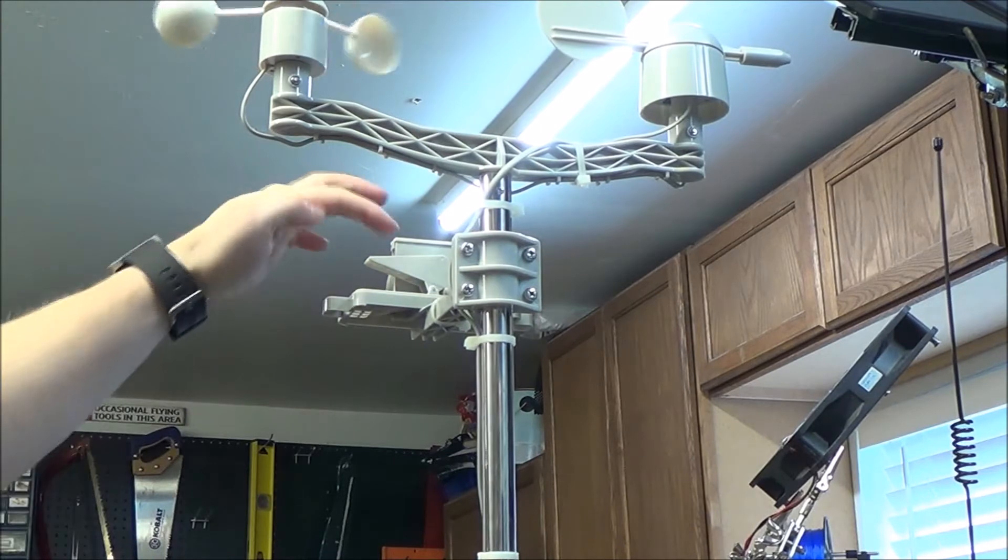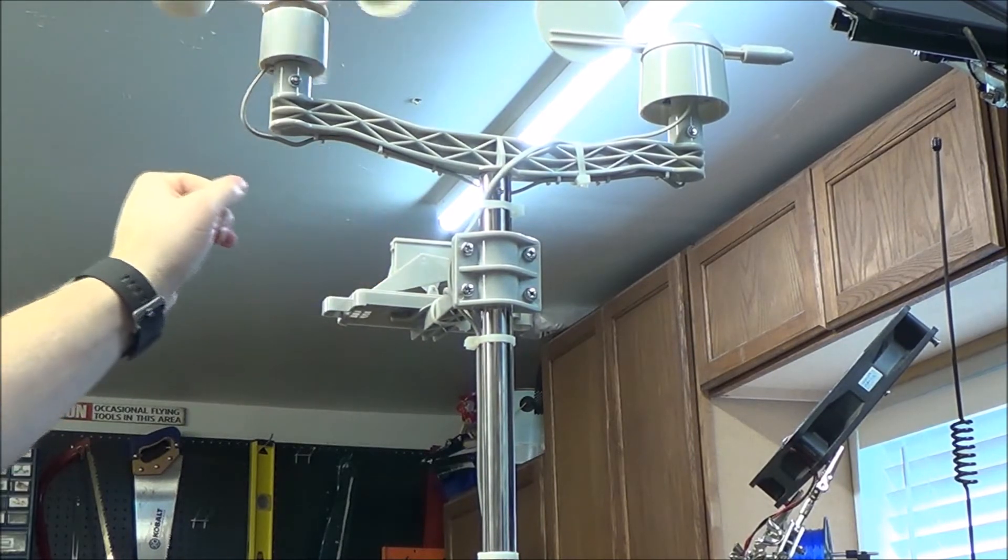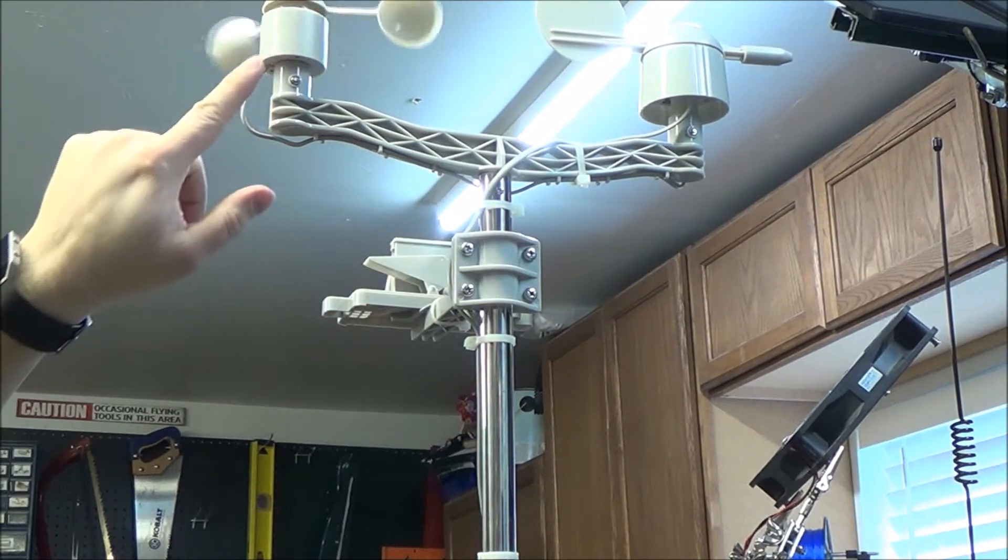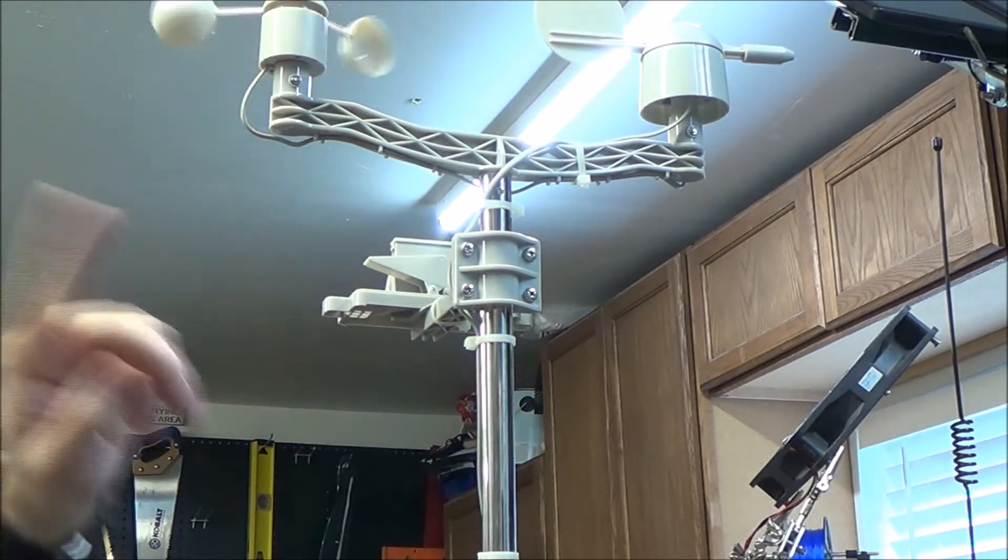There's basically a little cup that fills it up with rain, and whenever it switches, it sends a discrete pulse. The same with this guy. It's actually pulsing when it goes around.